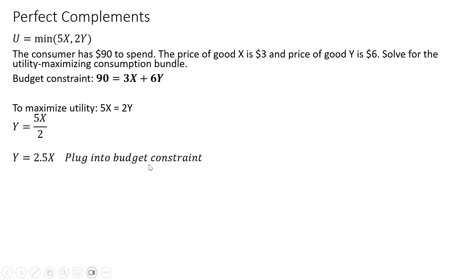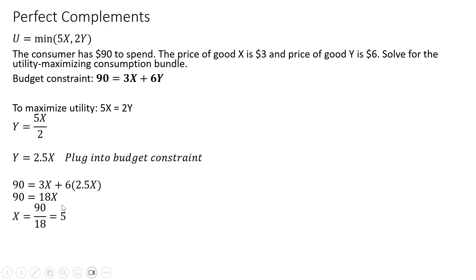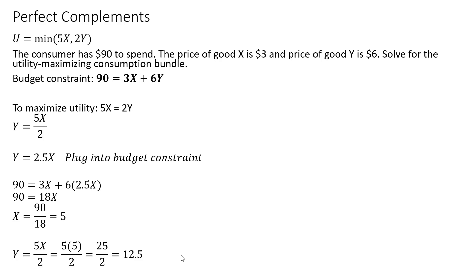Now we plug Y equals 2.5X into the budget constraint, replacing Y with 2.5X. After substituting and simplifying the right-hand side, we get 90 equals 18X. Dividing through by 18, X equals 5 — the consumer should buy 5 units of good X. For Y, we plug 5 into the Y equation: Y equals 25 divided by 2, or 12.5. So to maximize utility, the consumer should buy 5 units of good X and 12.5 units of good Y.